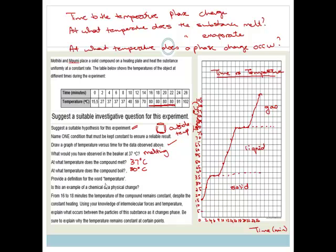Provide a definition for the word temperature. Now you guys need to go to your textbooks and your notes and go and learn the proper definition of temperature. But temperature is basically a measure of the average kinetic energy of the system. That is the definition. It is a measure of how quickly and how much kinetic energy the particles have in the system.